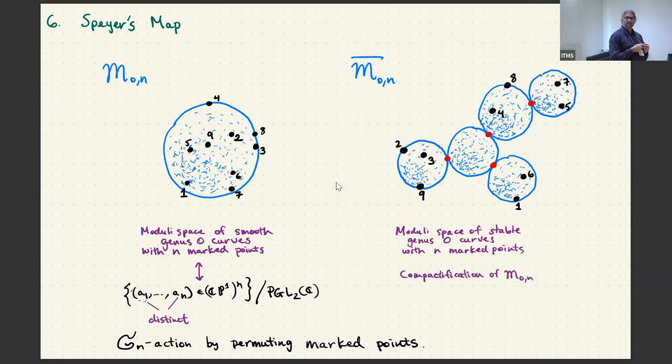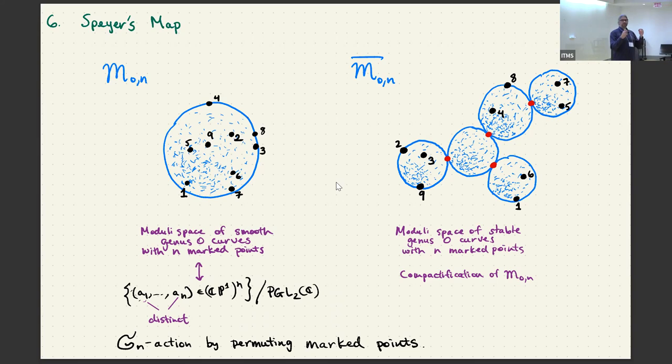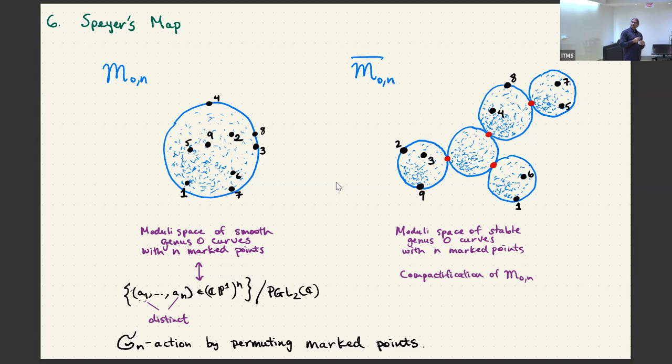The problem with this space is that it's not compact. There's an obvious compactification that just allows the points to collide, but it turns out that's not very good. A nicer compactification is the moduli space of stable genus-zero curves — basically tree-like structures of spheres joined together, with various marked points on different components.